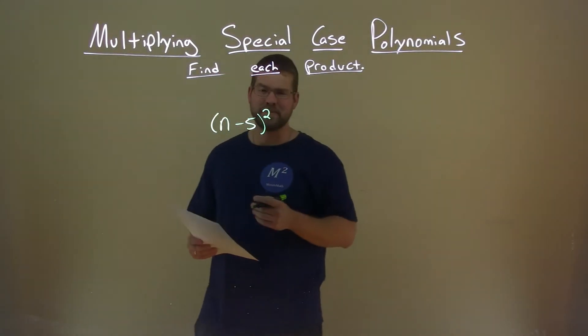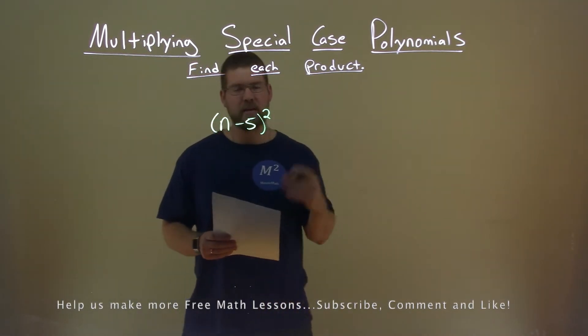We're given this product problem here. n minus 5 all squared, and we need to find the product.